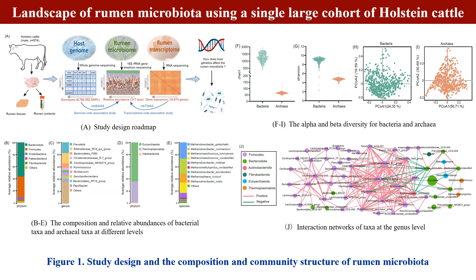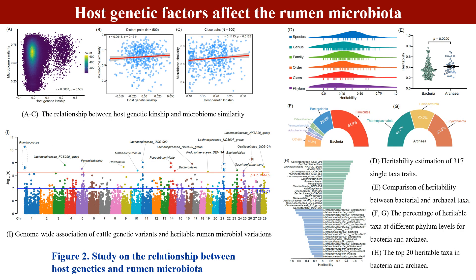Firstly, the composition and abundance of rumen bacterial and archaeal taxa from phylum to species levels were analyzed, and the differences in community diversity and structure between bacteria and archaea were compared. Secondly, we constructed an interaction network of taxa at the genus level to identify the core dominant genera. To investigate whether host genetics impact the rumen microbiota, a correlation analysis was performed between host genetic kinship and microbiome similarity using the Mantel test.